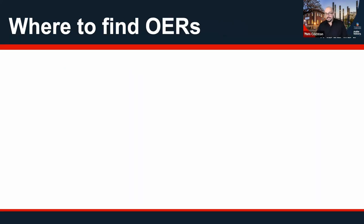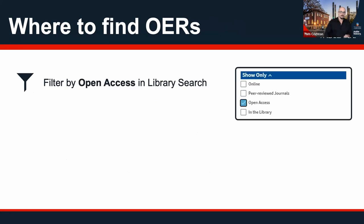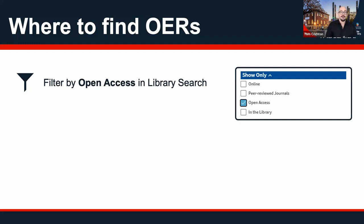So very quickly, where can you find OERs? There's another webinar later that's more focused on this, but one quick way is to go to library search — go to the University Library homepage, do a regular search and then filter by open access. We have many different Open Education Resource repositories that come into library search, and some of the bigger ones like Pressbooks, Open Stacks, and various others already come into library search automatically.